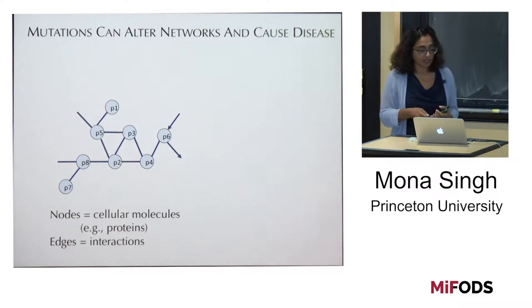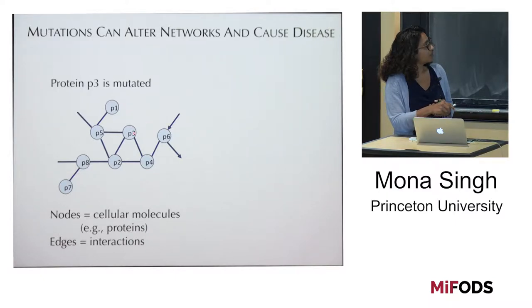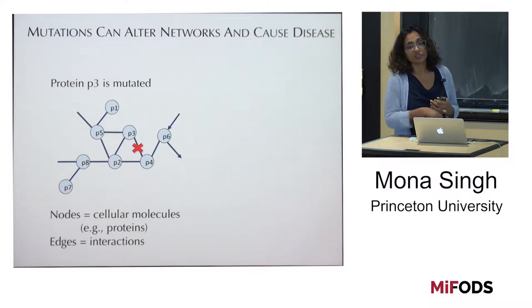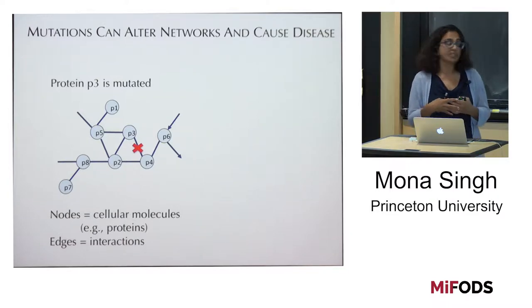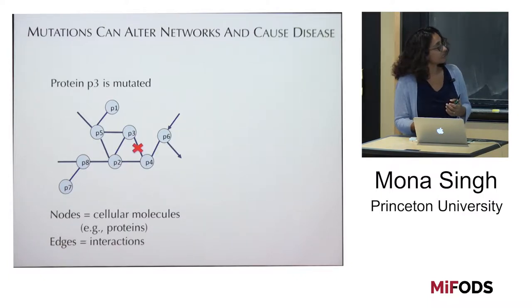One key thing about networks is that sometimes these networks vary or they are altered. For example, if one of the nodes corresponding to protein P3 is mutated, this can have an effect on the network. This could knock out the protein, or maybe it just removes an edge. These kinds of mutations can have major consequences — for example, they can underlie diseases. One disease where this kind of process takes place is cancer.